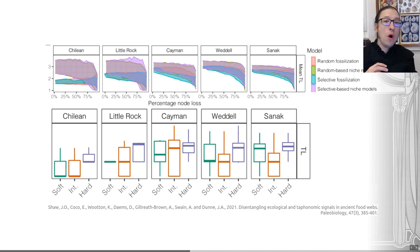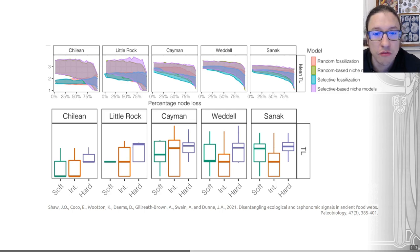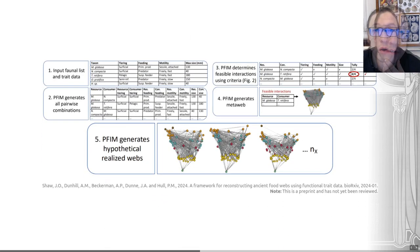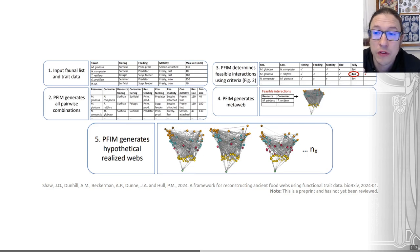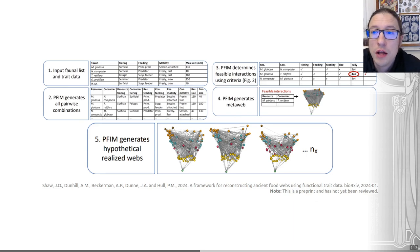It's a really nice example of how we can take an information-rich living set of food web community structures and model them computationally to understand what impact fossilization may have. I've chosen just one of many interesting results from that paper. A second publication by the same authors — available as a pre-print, so not yet peer-reviewed — presents a tool that can use functional trait data to reconstruct ancient food webs.